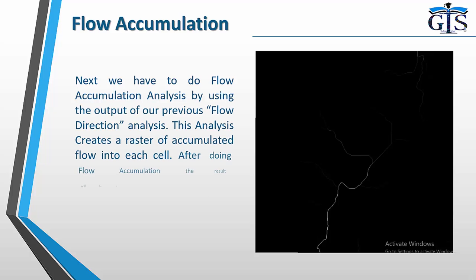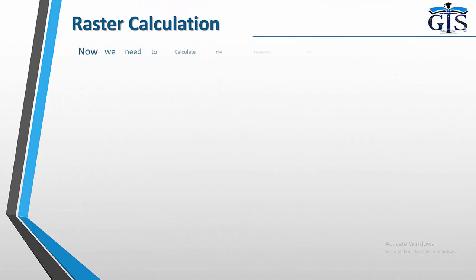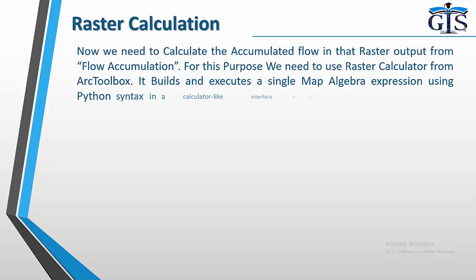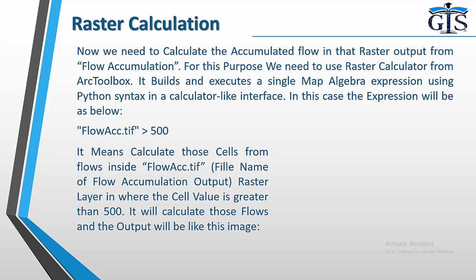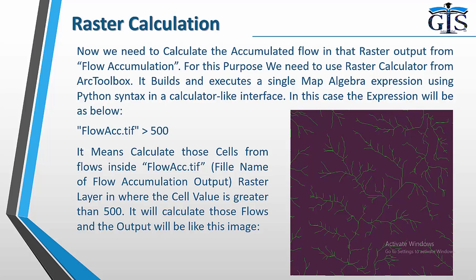Next, we perform flow accumulation analysis using the output of our previous flow direction analysis. This analysis creates a raster of accumulated flow into each cell, and the result will look like the shown image. Now we need to calculate the accumulated flow using raster calculator from ArcToolbox. It builds and executes a single map algebra expression using Python syntax in a calculator-like interface. In this case, the expression is: FlowSSC.tif > 500 — meaning calculate those cells from the flow accumulation raster where the cell value is greater than 500. Here the file name of the flow accumulation output is FlowSSC.tif. The output will look like the shown image.